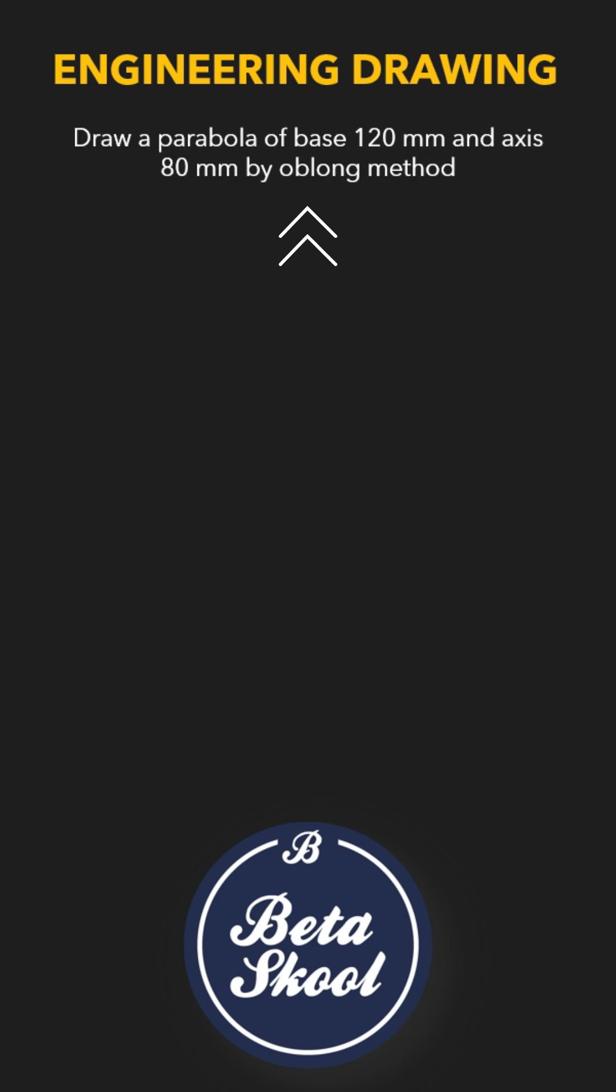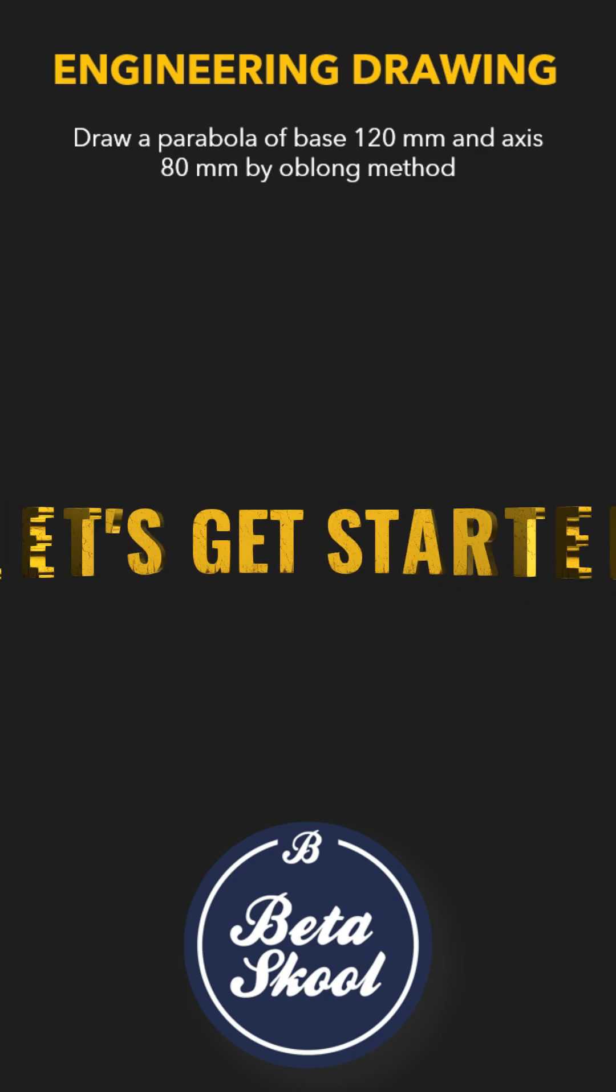The question reads like this: Draw a parabola of base 120 mm and axis 80 mm by the oblong method, or otherwise called the rectangle method. Let's get started.